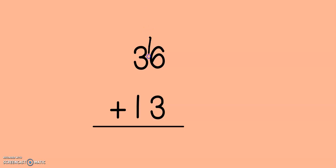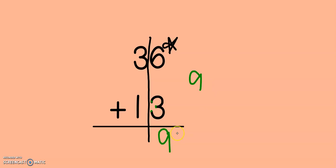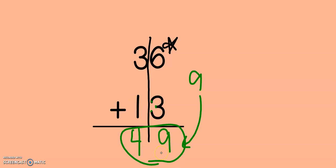Let's look at another example: 36 plus 13. I have 6 plus 3: 6, 7, 8, 9. Does 9 have a 10 in it? No, it does not. So I can just pull it straight down to the bottom. Then I have 3 plus 1 more — that gives me 4. Did I make a new hundred in this one, second grade? No, I did not. I didn't even make any new tens. I had no new groups of tens at the top. So my answer is 49.